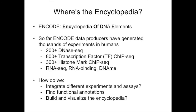So the first question is, where is this encyclopedia? As Mike Payson already talked about, ENCODE stands for Encyclopedia of DNA Elements. So far, ENCODE data producers have generated thousands of experiments in humans, including DNase-seq data, transcription factor ChIP-seq, histone mark ChIP-seq, and a wide variety of other experiments. The question remains: how do we integrate these experiments and assays together, how do we integrate data from other groups such as Roadmap to annotate functional regions of the genome, and how do we build and visualize this encyclopedia from these functional regions?